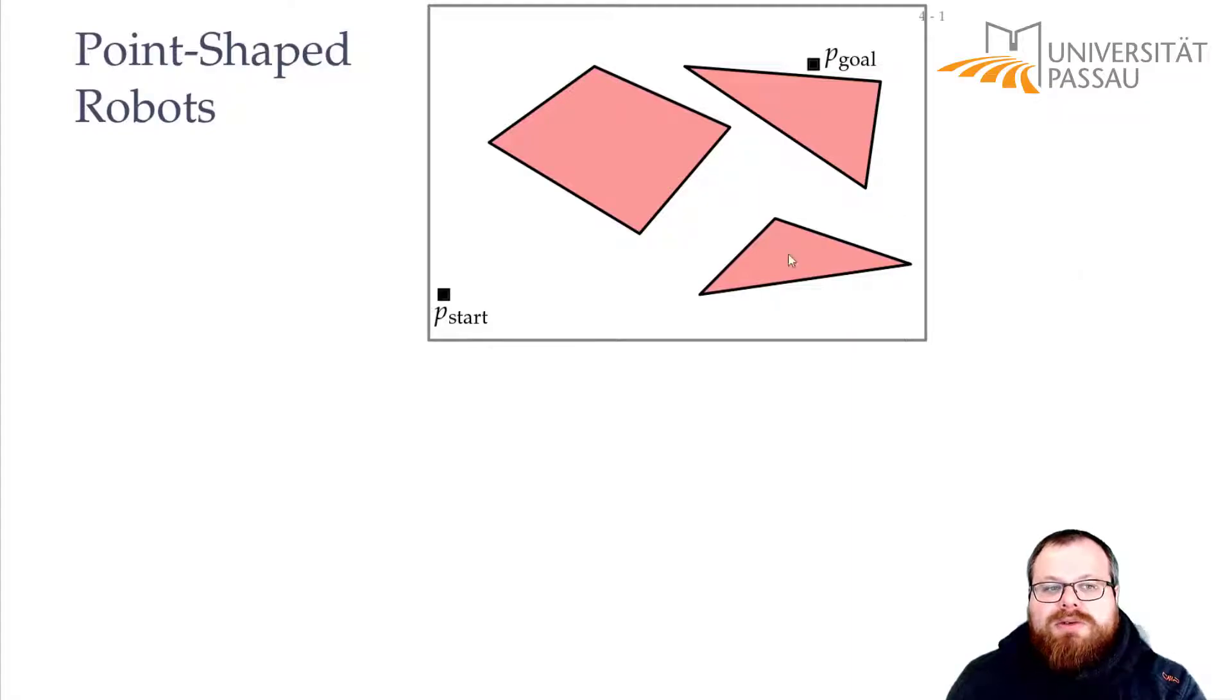First, assume that our robot is just a single point. This is the very basic version. So we have some start position in the plane, we have some goal position in the plane, and we want to walk from the start to the goal position, but we also have some obstacles. Now, how would you do this? The way I want to present how to do this is, if we don't even know what the start and the goal point is in the beginning, then we can do some preprocessing, and then for two points we can query where is a path between them.